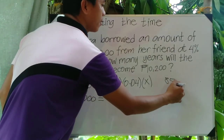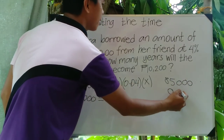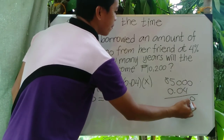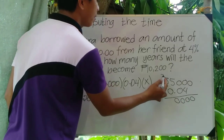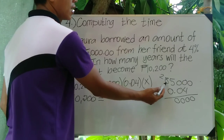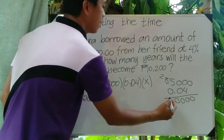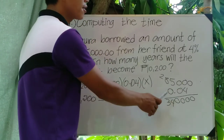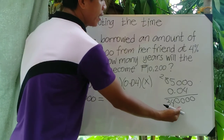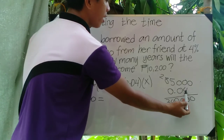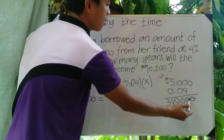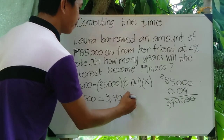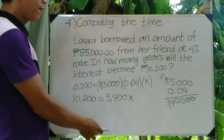After multiplying 85,000 by 0.04, we count two decimal places from the right and cancel two zeros. The result is 3,400. So we have 3,400x equals 10,200.